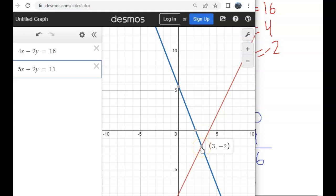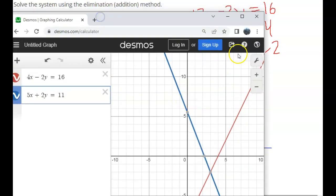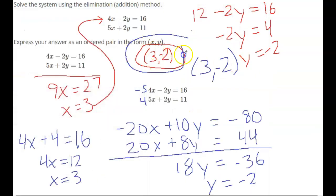It's at the point 3 for x, negative 2 for y. This is visually what we found. These two lines, where do they cross? 3, negative 2. And then algebraically, we found it right here.